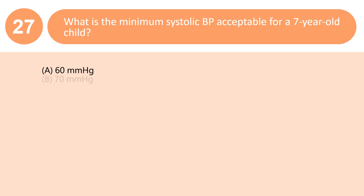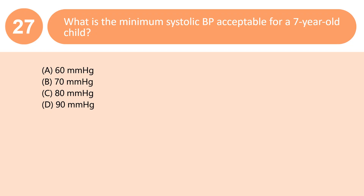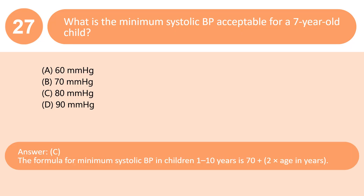What is the minimum systolic BP acceptable for a 7-year-old child? A. 60 mmHg. B. 70 mmHg. C. 80 mmHg. D. 90 mmHg. Answer: C. The formula for minimum systolic BP in children 1–10 years is 70 + (2 × age in years).